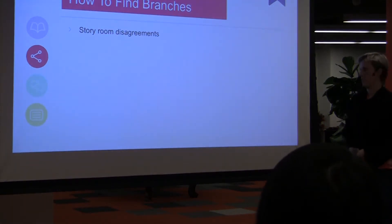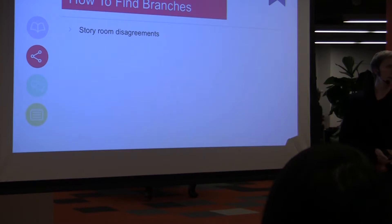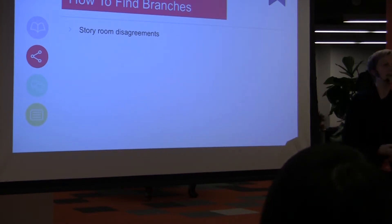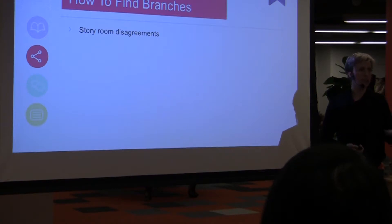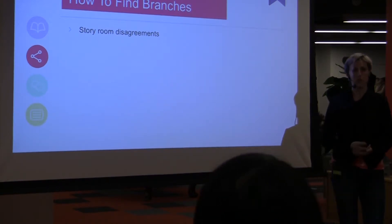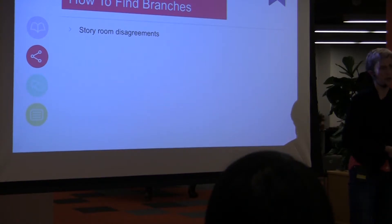So how do you find those branches? Number one: a great place is story room disagreements. When you're in the room debating — 'man, I don't know if you should do this or that' — that's a great point to make a decision into a branch. But again, don't branch early in your outline. Make a choice, pursue a great story, and make a note that this is a good spot for a branch.